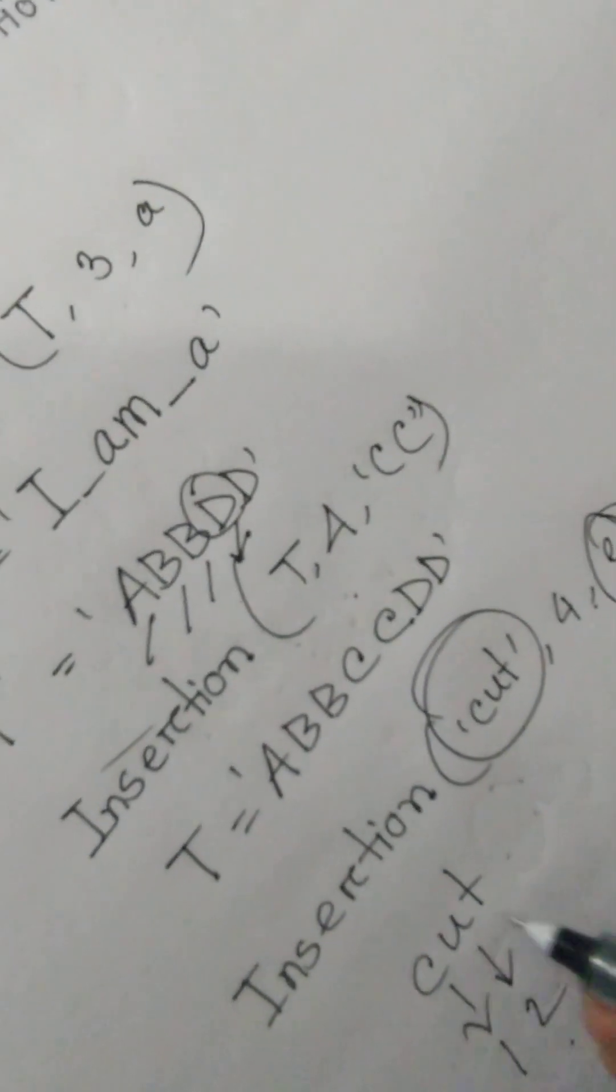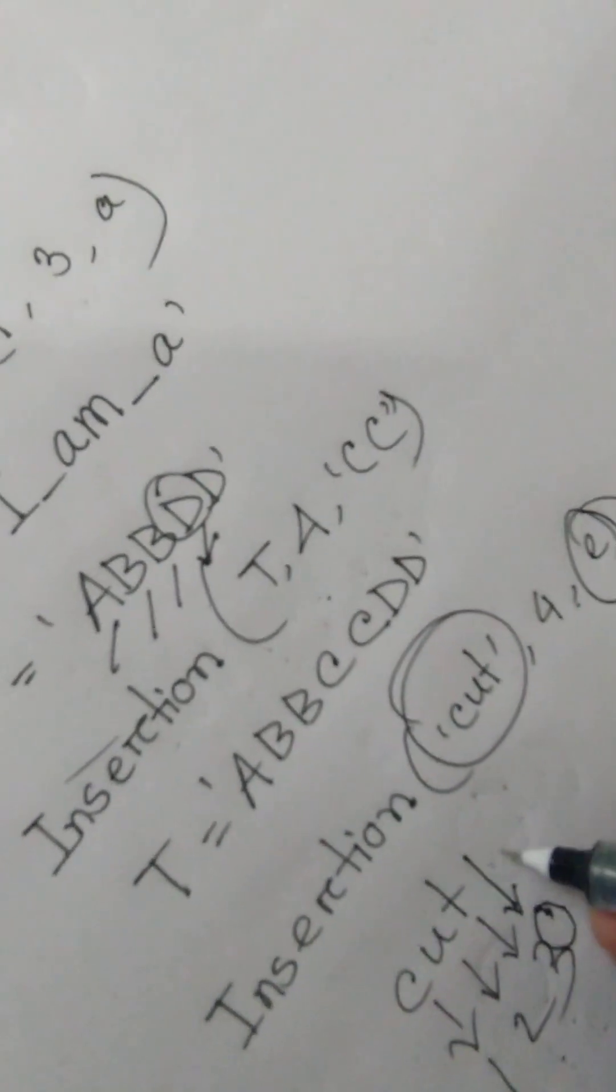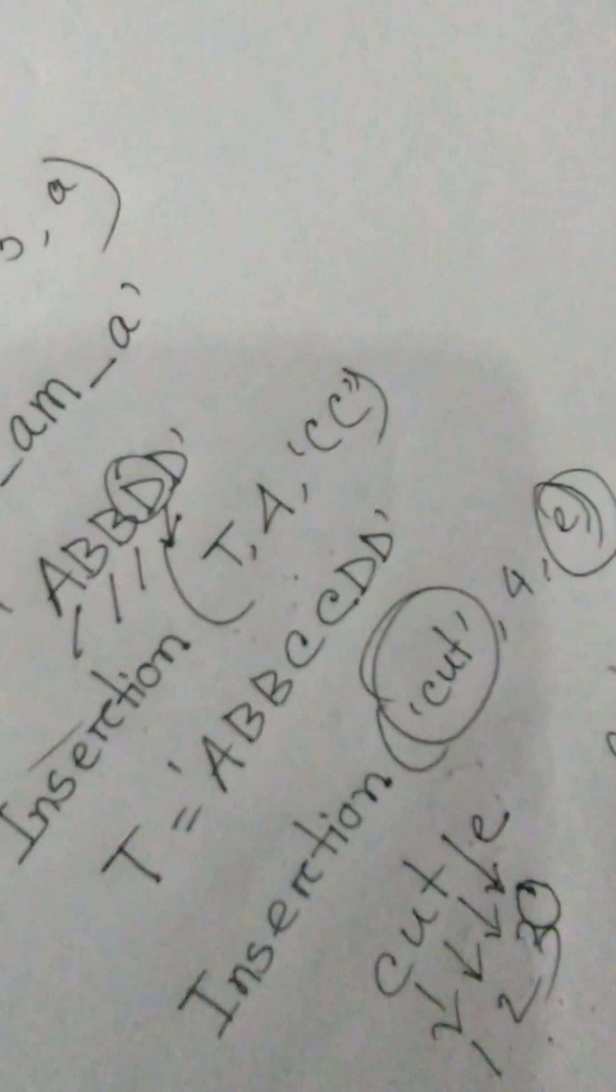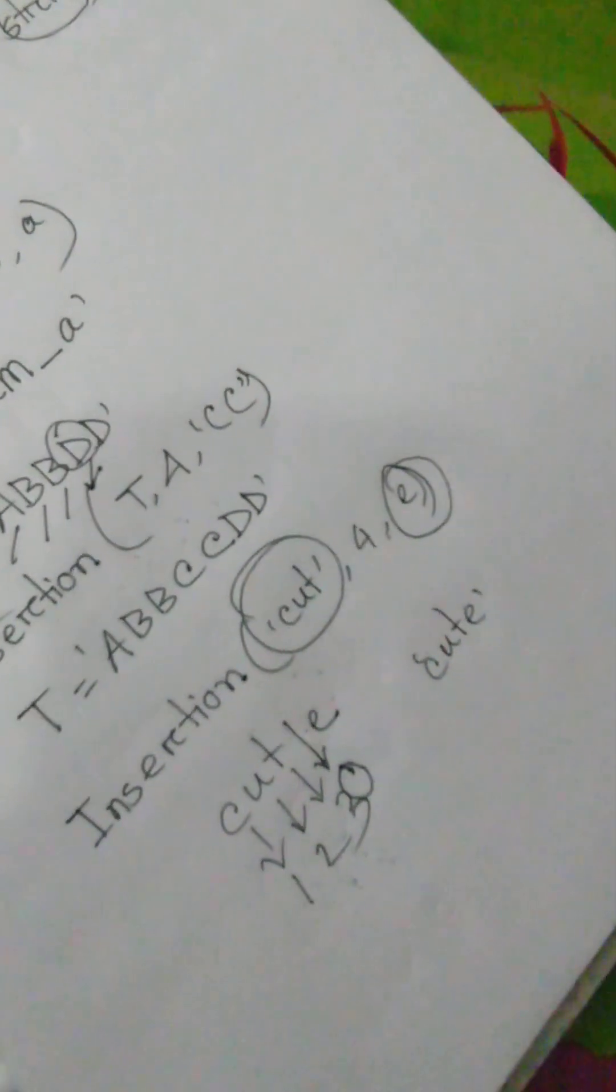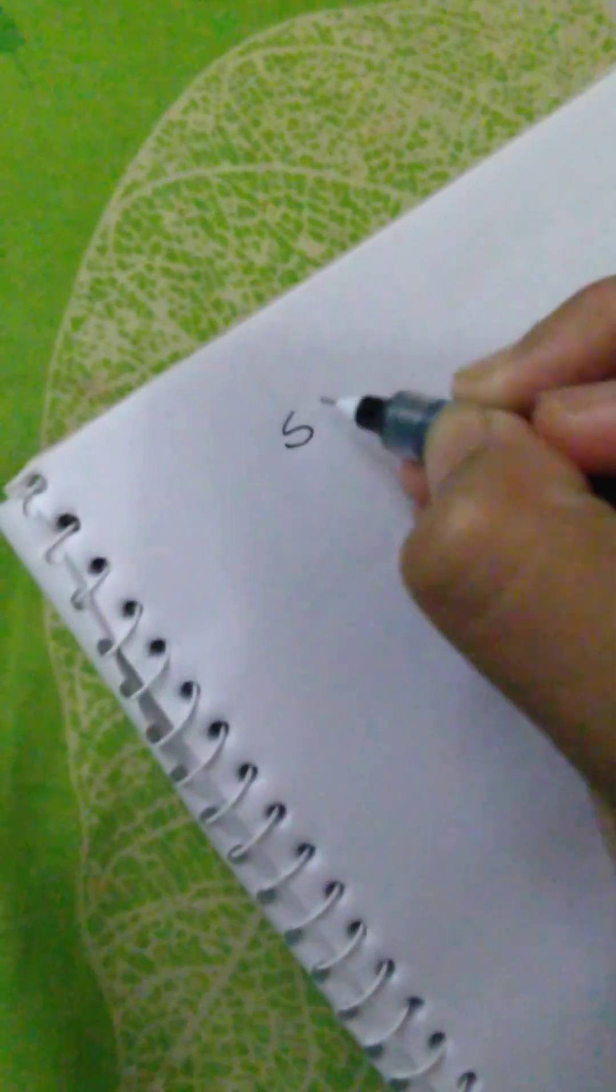And here we have to add E, that is 'cute'. That's about the string insertion. Now we are going to explain string deletion.